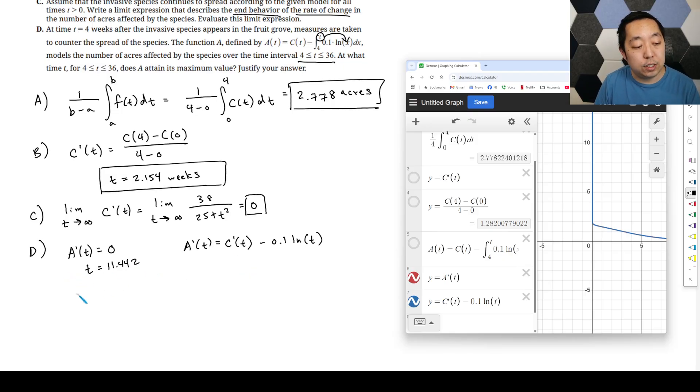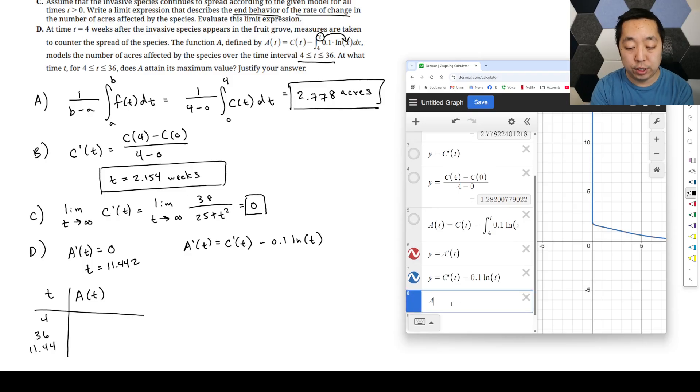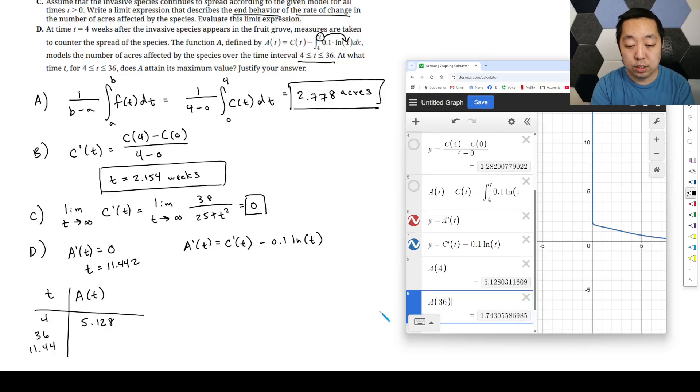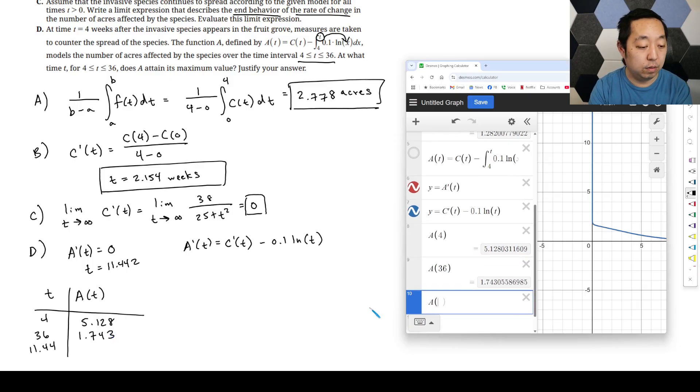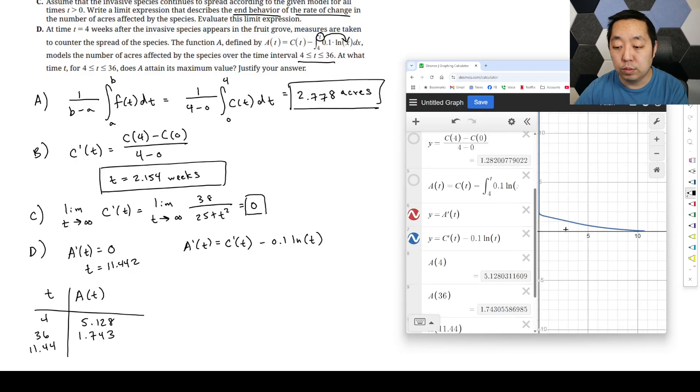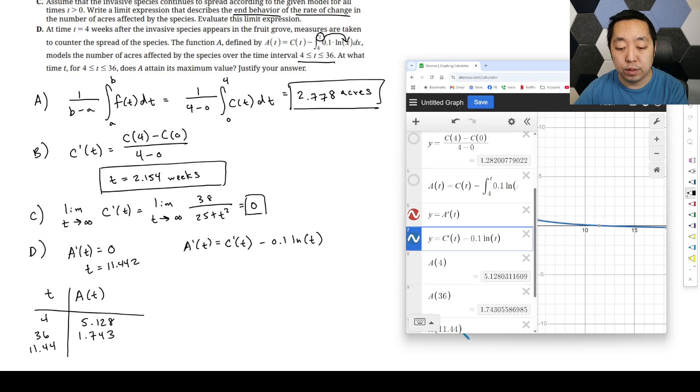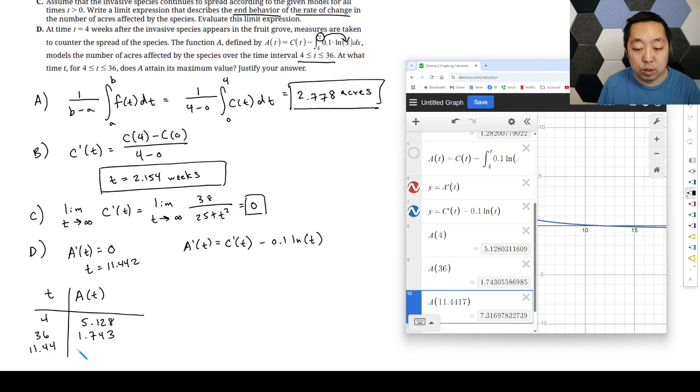Now we want to evaluate the function at the endpoints of the interval. The endpoints of the interval are 4 and 36 and also at our critical point. What's nice is I have an expression here. I can just do A of 4 - that's going to be 5.128. Then do A of 36, that's going to be 1.743. And then finally do A of 11.442, and that's going to give you 7.317. So this is the max.